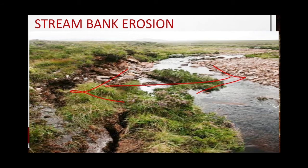The banks of streams or rivers get eroded every year by the continuous flowing of water. During floods, the erosion takes a serious form and gradually the bed of the river widens. When the river overflows, the soil is removed from the bank — this is stream bank erosion.